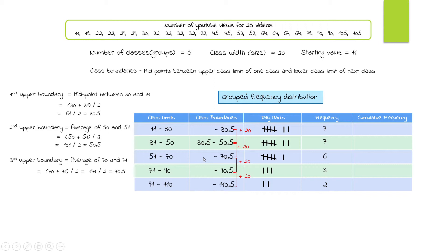So to summarize: the third lower boundary is 50.5, the fourth is 70.5, the fifth is 90.5, and working backwards: 30.5 minus 20 gives 10.5 as the first lower class boundary. This is how you calculate the class boundaries.